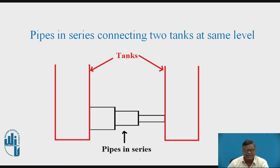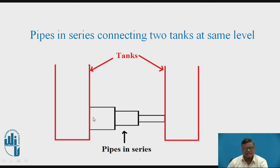Now let us see the compound pipe connected to two tanks. We have one tank on the left hand side and one tank on the right hand side. These two tanks are connected to each other with the help of a compound pipe or pipes in series. You might observe that we have firstly the diameter as larger, then the diameter is reduced, and again the diameter is reduced for the third section. But not necessarily always we will have a reduction in diameter when going from the first tank to the second tank — we may have any diameter for any of the sections. The only condition is that the diameters are different and the connections are end to end, so it is called pipes in series or compound pipe.